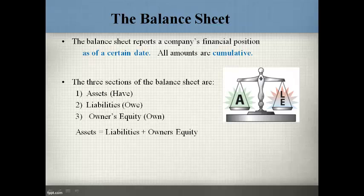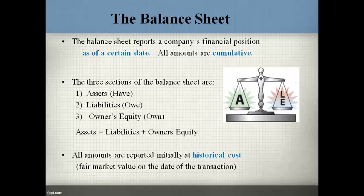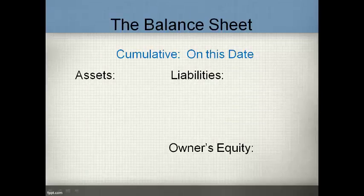A balance sheet balances when assets equal liabilities plus owner's equity. The values on the balance sheet are initially reported at historical cost and remain at historical cost unless the items have permanently lost value. The balance sheet presents the cumulative financial position of the company — it reports what the company has, what the company owes, and what is owned by the owners.